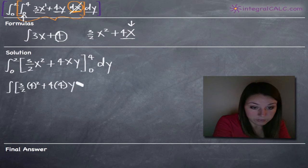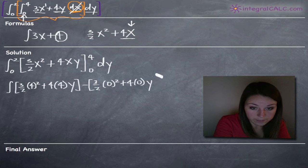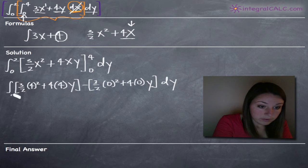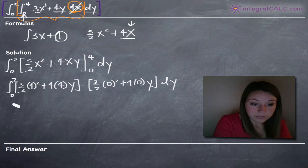So we plug in for x, leave y as it is, and then we subtract what we get when we plug in 0, so 0 squared plus 4 times 0 times y and then dy. I forgot my limits of integration for y from 0 to 2.